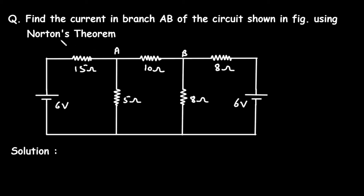In this video, we will see a problem on Norton's Theorem. The question is: find the current in branch AB of the circuit shown in the figure using Norton's Theorem. We have to find the current through the 10 ohm resistor in branch AB by using Norton's Theorem.